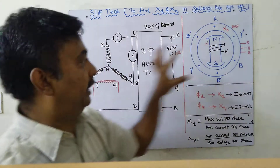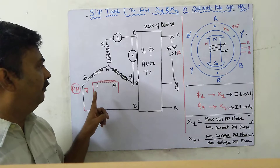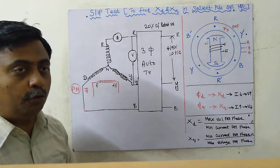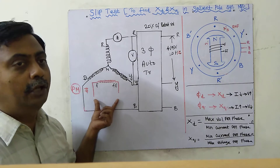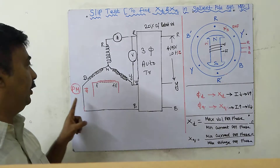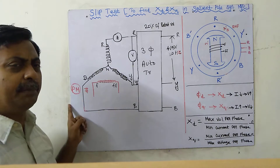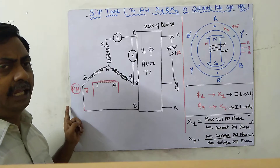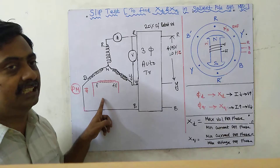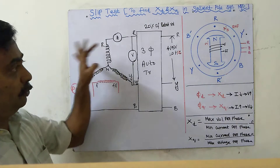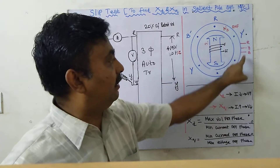What about the rotor? Normally the rotor is given DC supply, but here we are not giving any DC supply at all. Without DC supply, it won't become an electromagnet. Instead, using a prime mover — for example, a turbine or, in a laboratory, a shunt motor — we are going to rotate this rotor at just slightly less than synchronous speed.